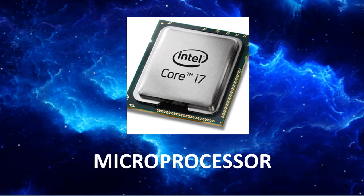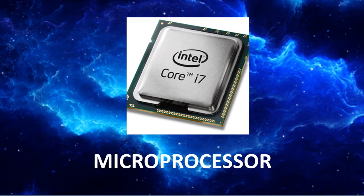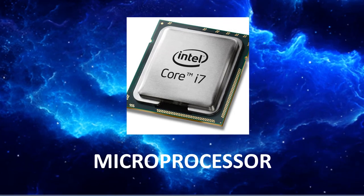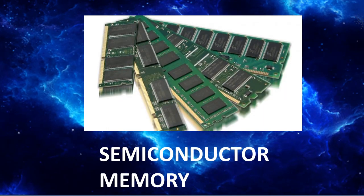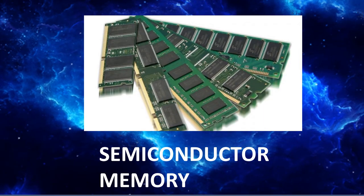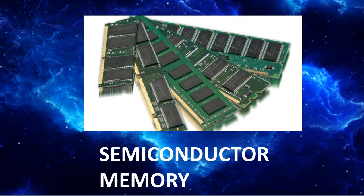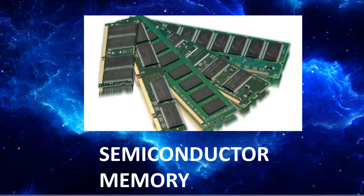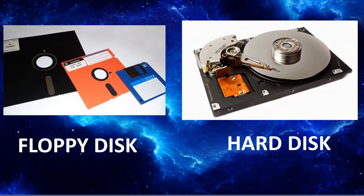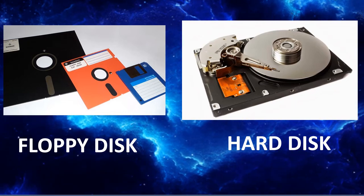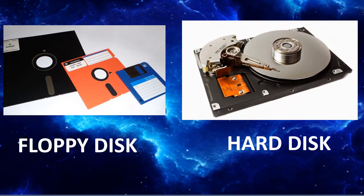In this thousands of integrated circuits were built onto a single silicon chip. In fourth generation of computer, semiconductor memory were used, resulting in fast random access to memory. Magnetic disks like floppy disk and hard disk were used as secondary storage device.